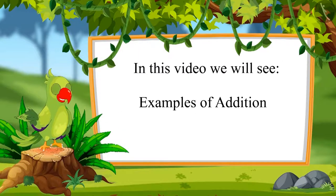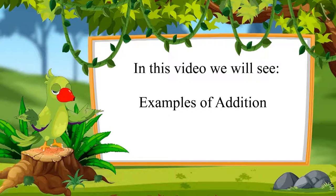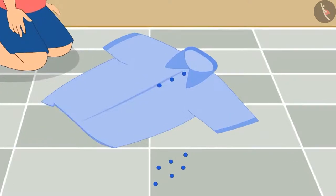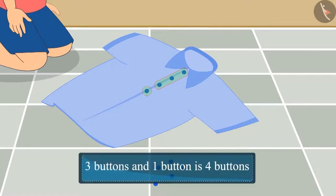Come on, let us see some more examples in this video. Today, Chutu wants to stitch a few buttons on his shirt. He already stitched three buttons, and then he stitched one more button. Three buttons and one button is four buttons.